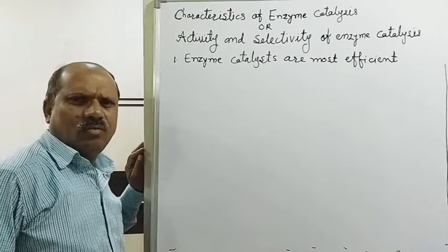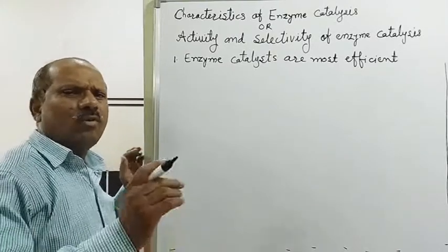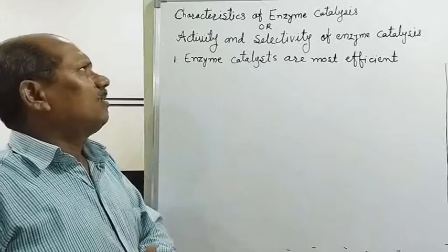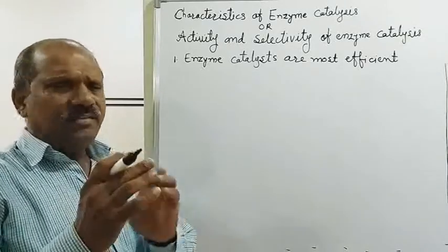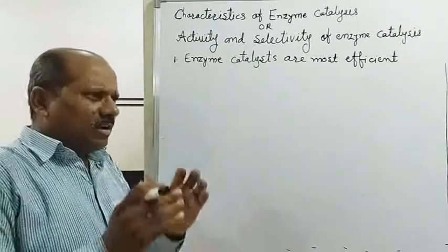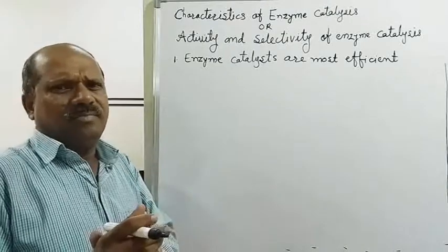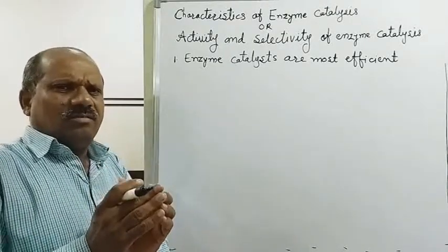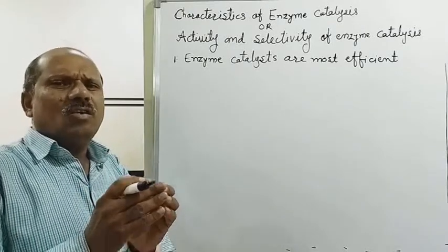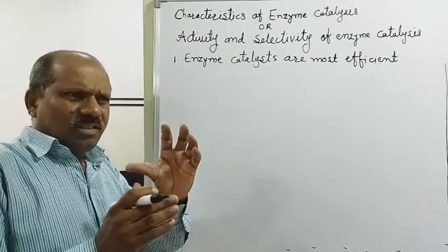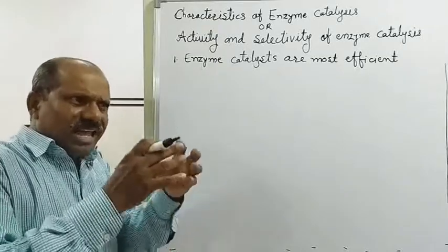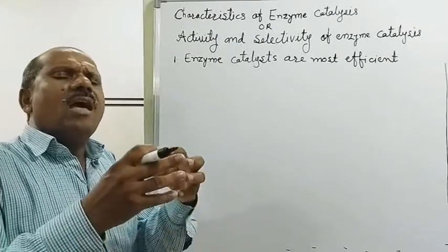Dear friends, today I am going to explain characteristics of enzyme catalysis — the activity and selectivity of enzyme catalysis. First of all, let us understand what is meant by an enzyme. Enzymes are nitrogenous organic compounds. These are chemically complex protein molecules, and these protein molecules are called enzymes. Enzymes play the role of a catalyst.